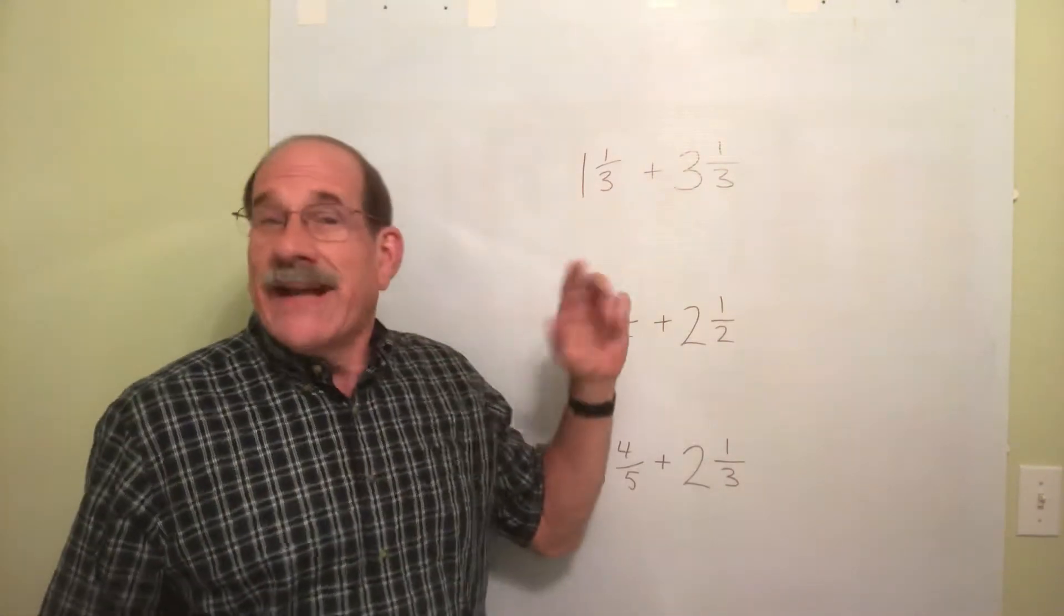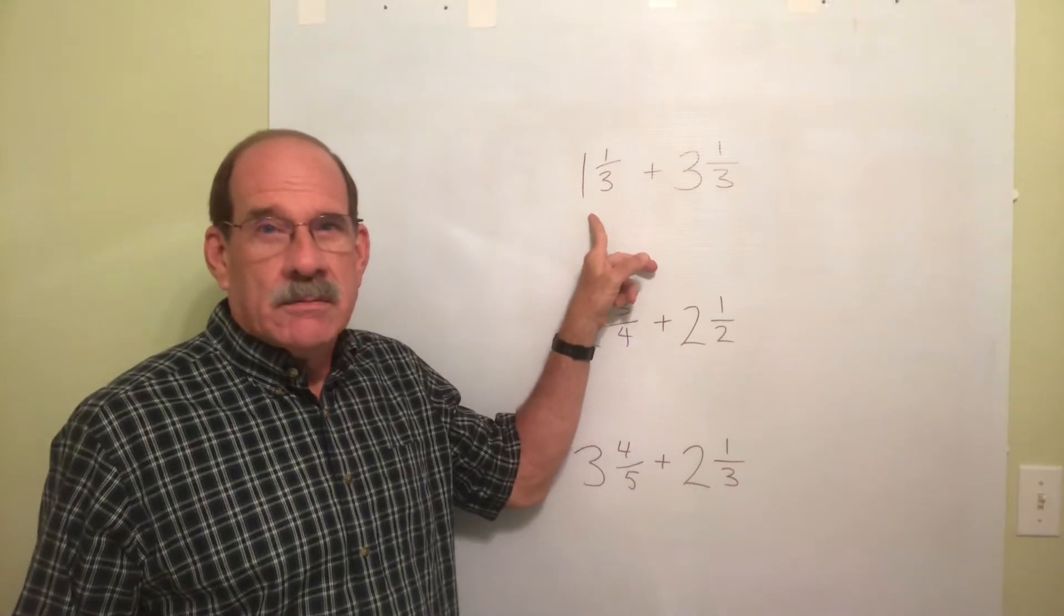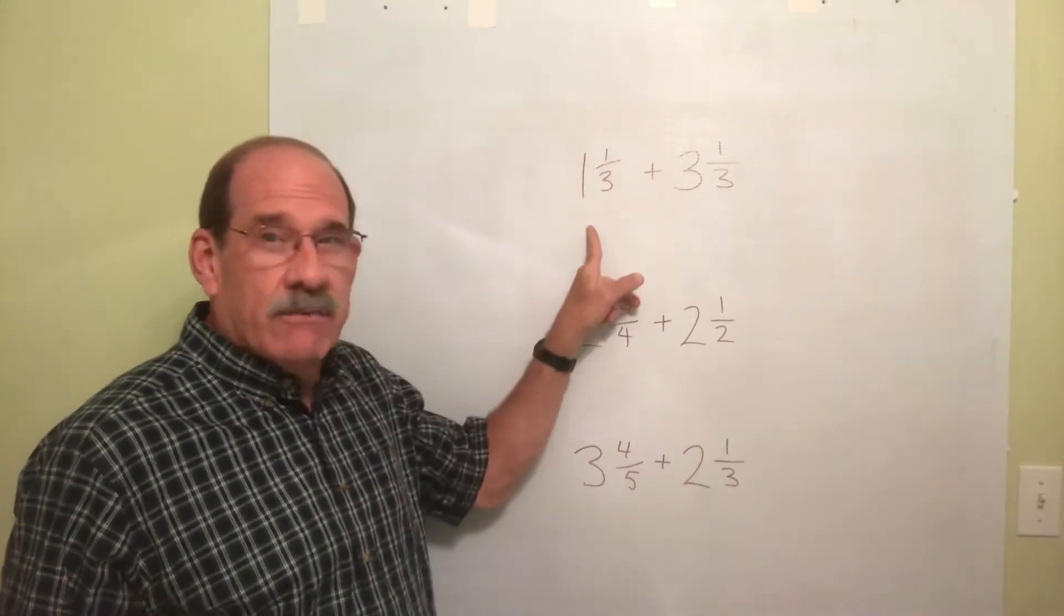One way is, and I don't recommend it, you could convert each of these into an improper fraction. Meaning do the 1 times 3, that's 3, plus 1, that's 4. Make this into 4 thirds.